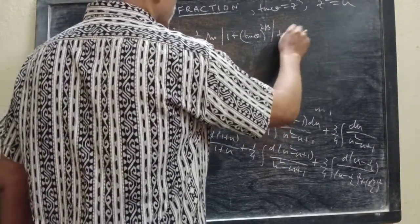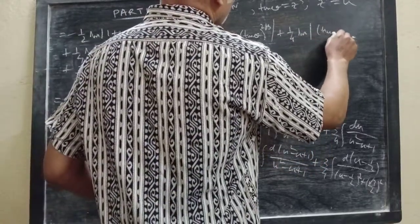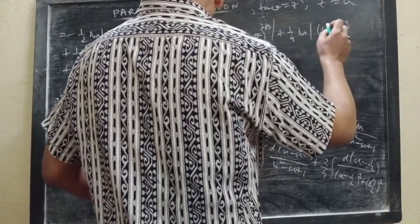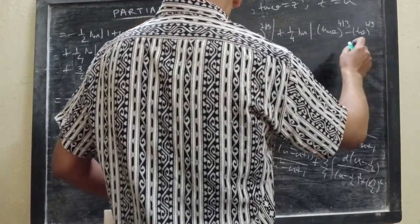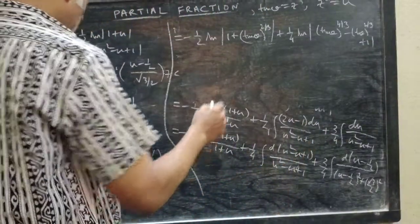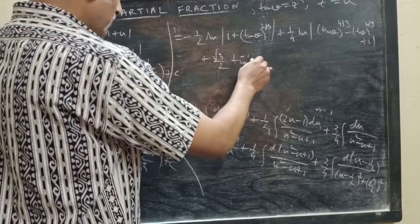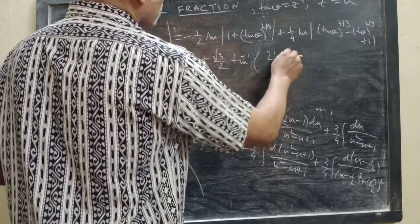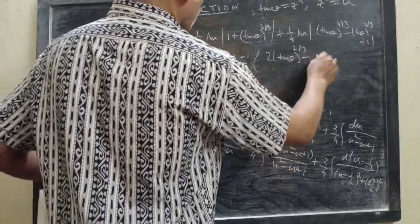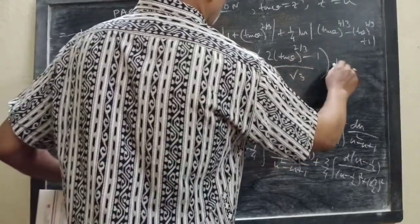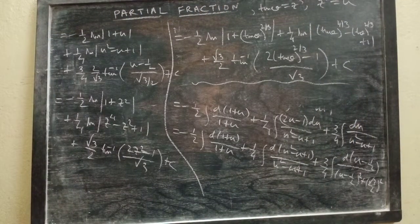So: −(1/2) ln|1 + tan²/³θ| + (1/4) ln|tan⁴/³θ − tan²/³θ + 1| + (√3/2) tan⁻¹((2 tan²/³θ − 1)/√3) + C. This will be our final answer of the integral of ∛(tan θ) dθ.